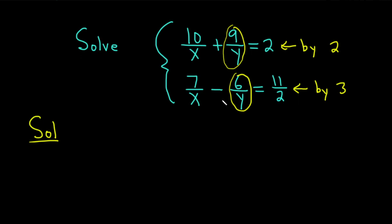So multiplying this first equation by 2, 2 times 10 is 20, so we have 20 over x, plus, and then 2 times 9 is 18. So we have 18 over y. And then we also have to multiply the other side by 2. So 2 times 2 is 4.